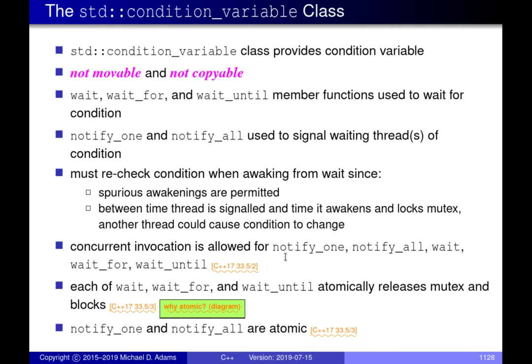All of these functions — notify_one, notify_all, wait, wait_for, wait_until — allow for concurrent invocation. You don't have to worry about what happens if two threads call notify_one simultaneously. This is all safe; these functions are internally protected from being invoked from multiple threads at the same time and won't introduce data races.